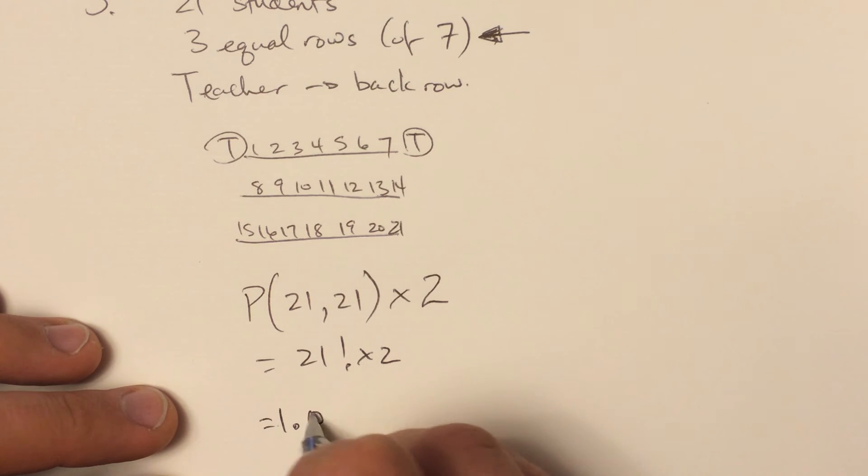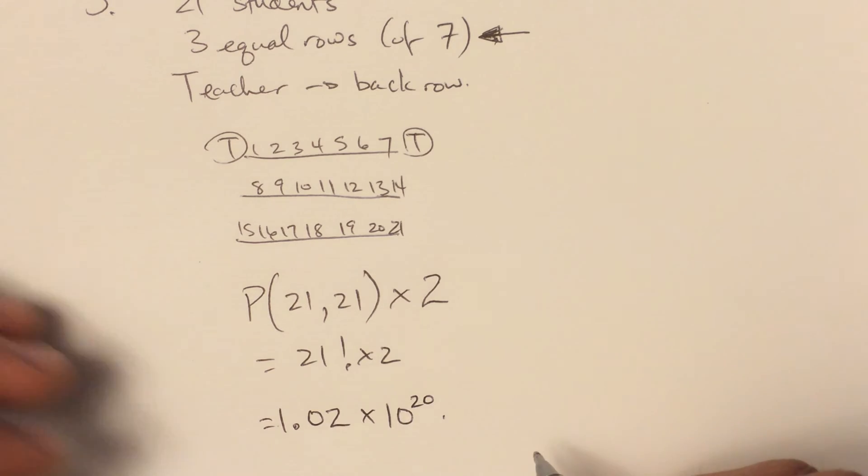And a lot of you ended up using scientific notation, something like 1.02 times 10 to the 20th. And that's all.